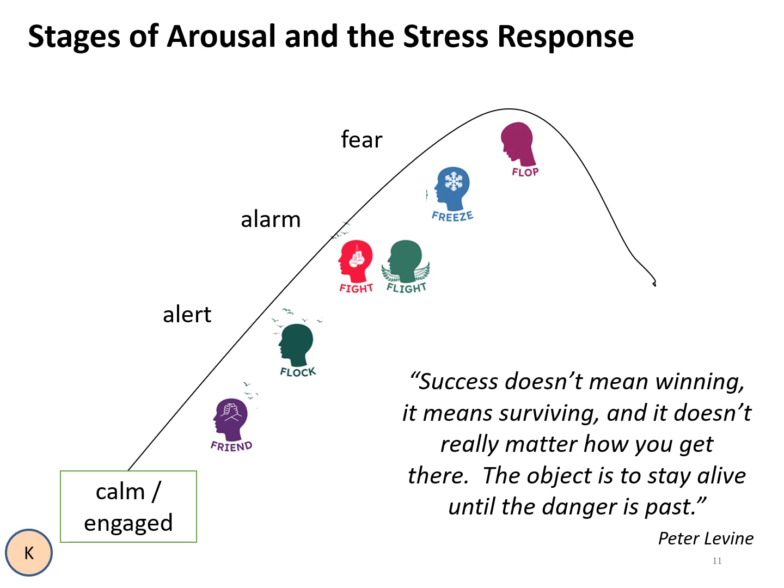As stresses increase, the body will draw on the five F's for survival: Friend — engaging with others to connect and feel safe; Flock — joining a group because there is more safety in numbers; Fight — going towards the perceived danger; Flight — moving away from the perceived danger; and Freeze — getting stuck and immobilised. Flop, also known as shutdown, is when all else fails and the body shuts down and can dissociate until the perceived threat has gone. Successfully used strategies, whether viewed as appropriate or not, will be reinforced.